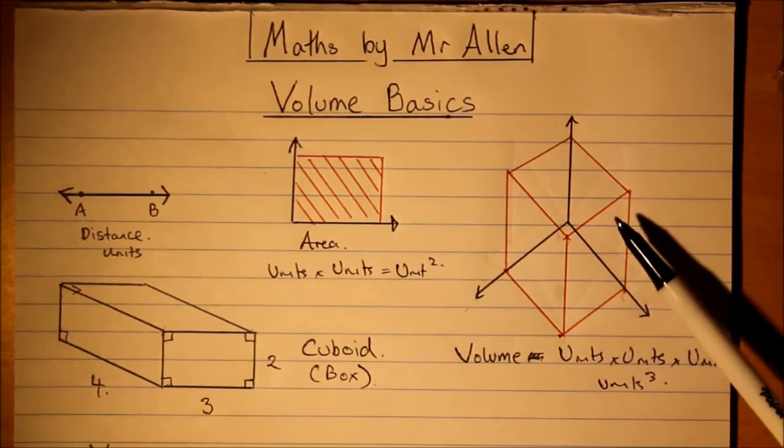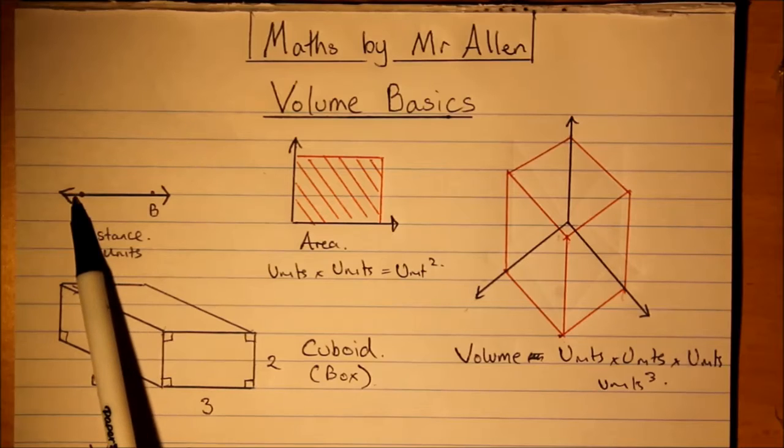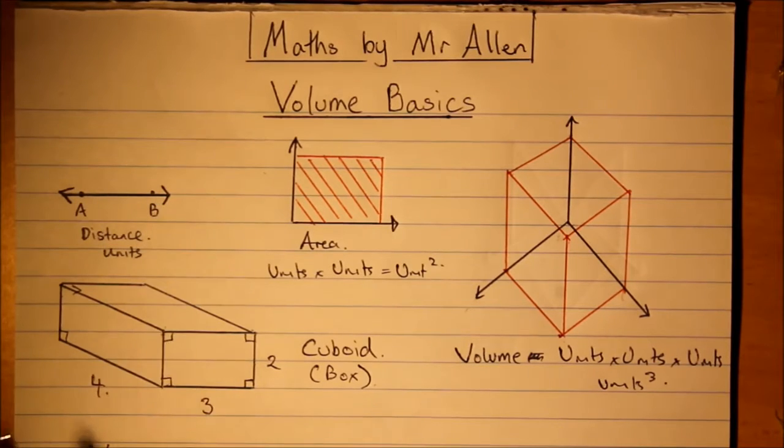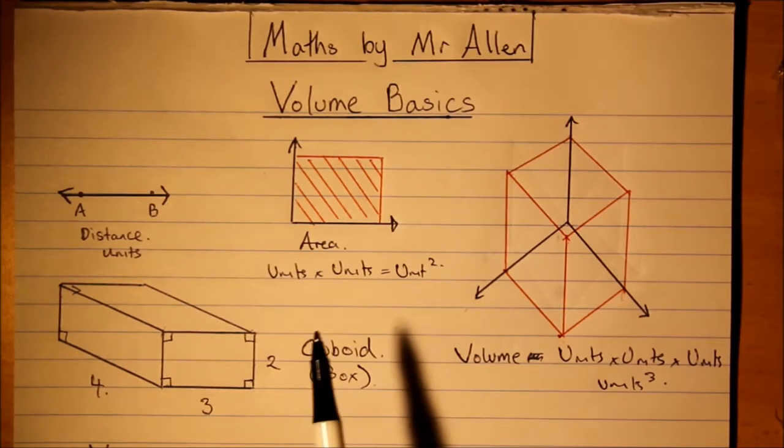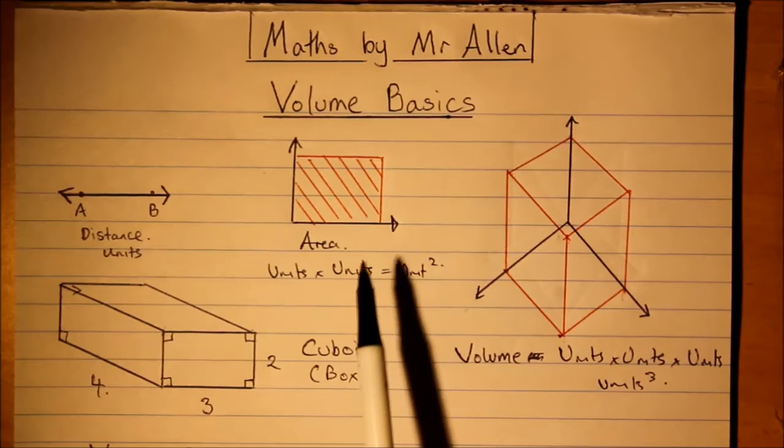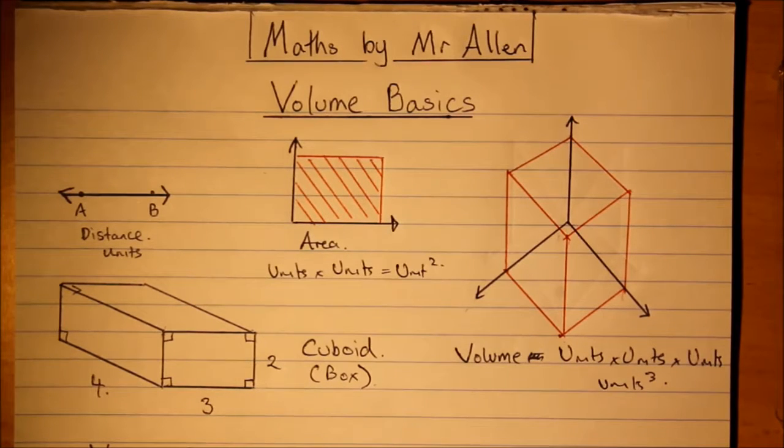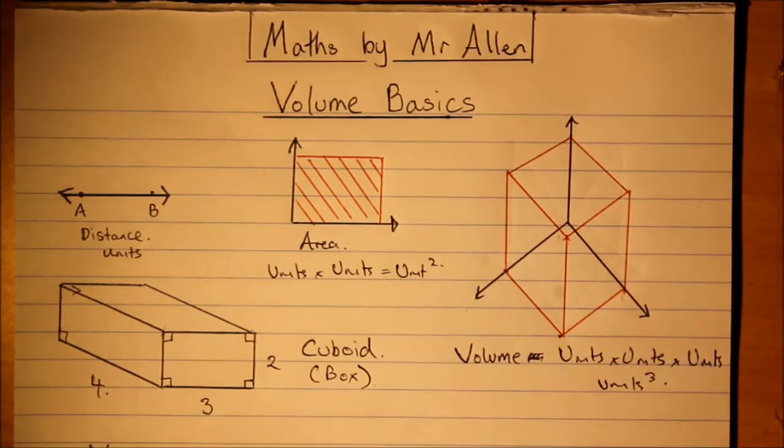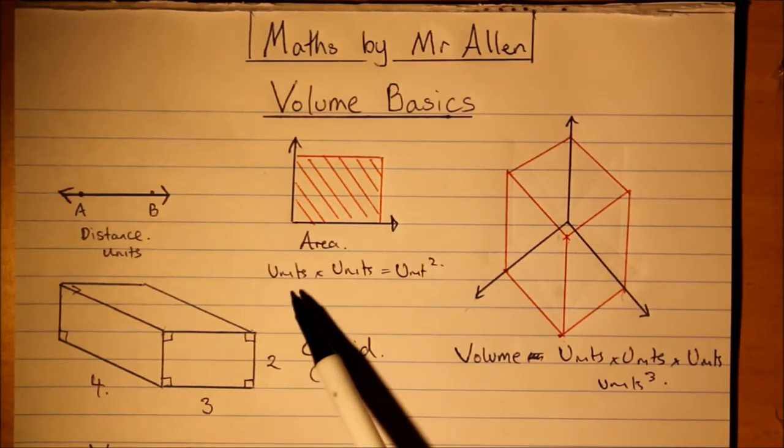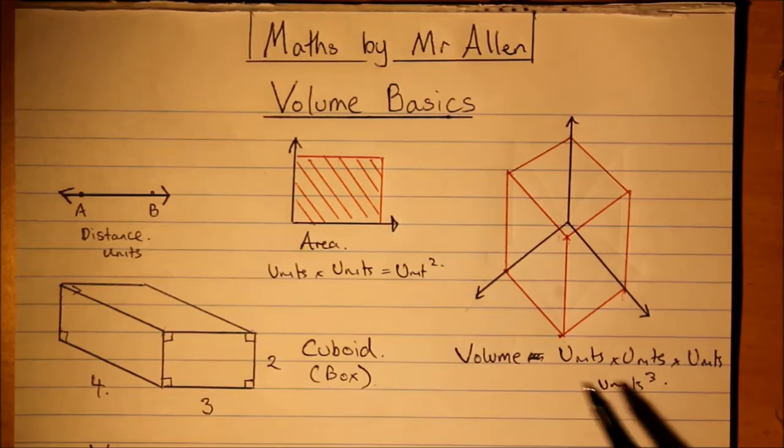When we compare this to measurements of length or distance, that just measures the length from one point to another point, so we've just got units of length. When we measure area, that's the surface within a boundary and area has two dimensions of length, so we have square units. Volume, because it has three dimensions of length, we have cubic units.